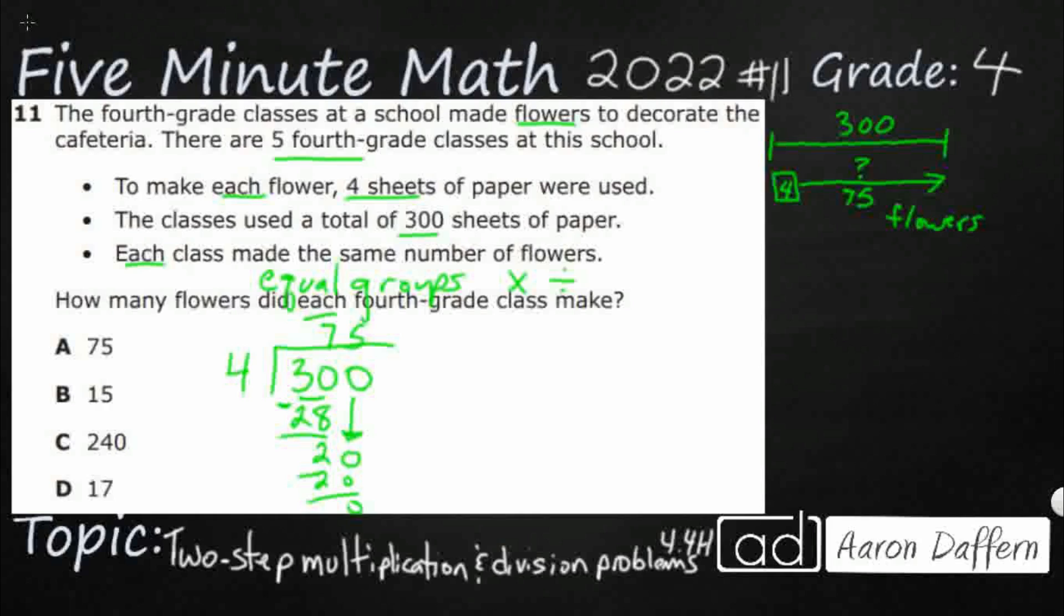So 75 flowers. Each class made the same number of flowers, so there's a total of 75 flowers being made. Each class, and look at this, goes right back up here. There are five classes. So now I've got a second strip diagram. I've got a new total. I've got 75 flowers and I've got five classes and each class made the same number of flowers. So we're doing equal groups again.